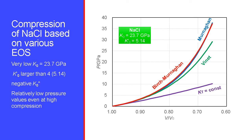Let us compare the pressures given by various equations of state using materials frequently used as pressure markers. The equations of state considered are: the third-order Birch-Murnaghan equation of state, Murnaghan's equation of state, Vinet's equation of state, and the pressure assuming KT is constant even at high pressures. The first example is NaCl (sodium chloride), whose isothermal bulk modulus at zero pressure is 23.7 GPa and its pressure derivative K0' is 5.14. Birch-Murnaghan and Murnaghan's equation of state provide almost the same pressure values.